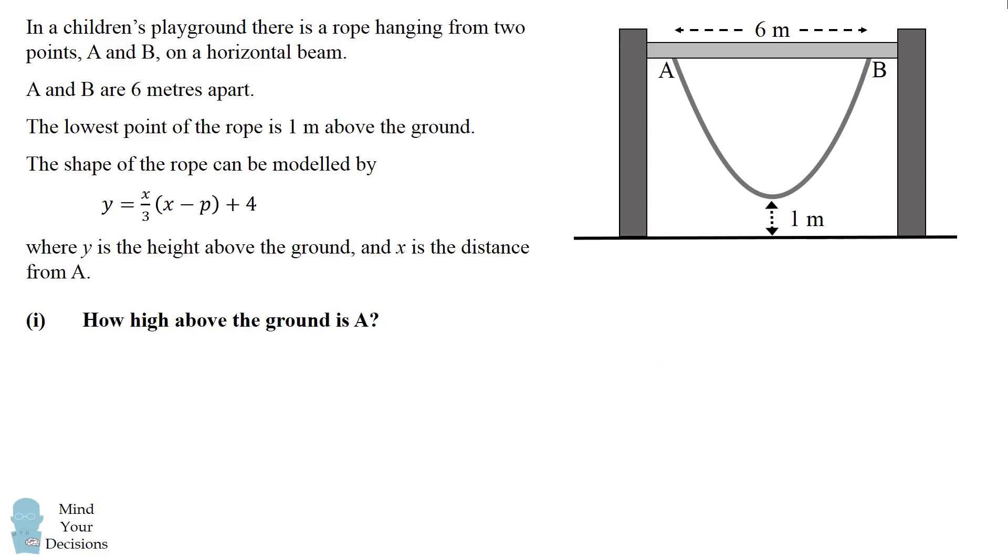So here's how I would solve the first part. How high above the ground is A? At point A, the distance from A is 0 which equals x.